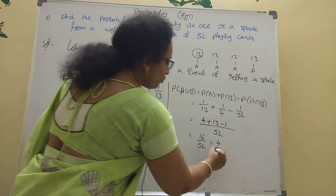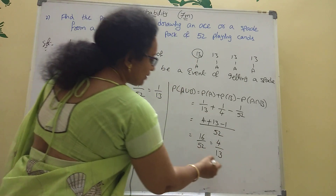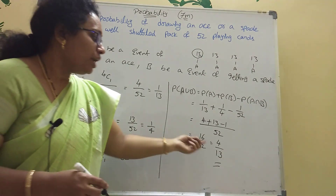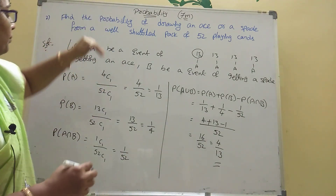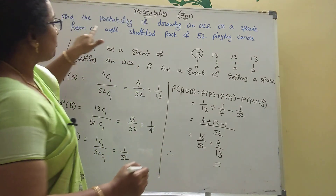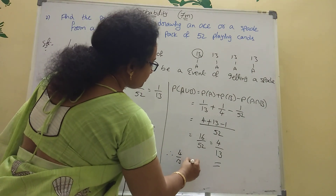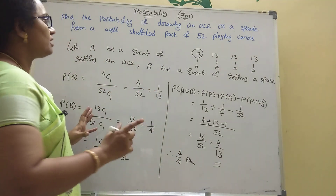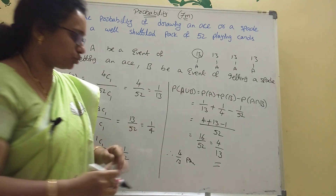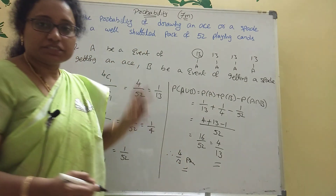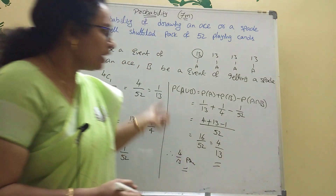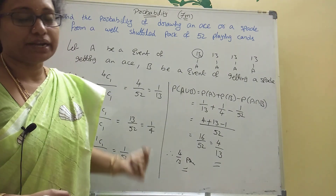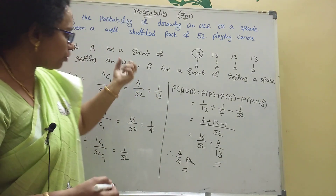P of A union B equals P of A plus P of B minus P of A intersection B. P of A is 1 by 13, P of B is 1 by 4, P of A intersection B is 1 by 52. Simplifying: 4 by 52 plus 13 by 52 minus 1 by 52 equals 16 by 52, which is 4 by 13. The probability is 4 by 13.